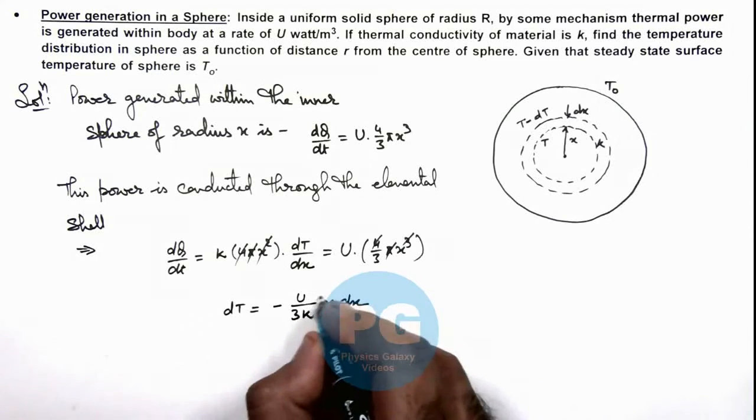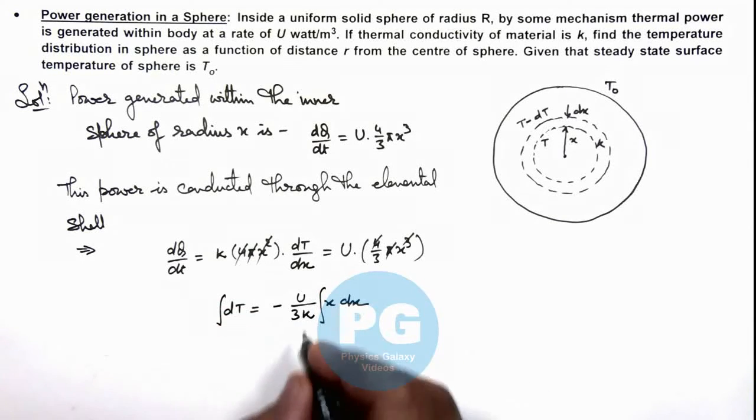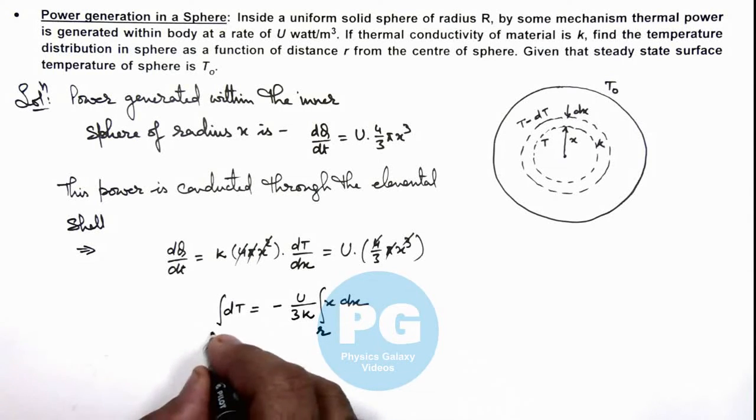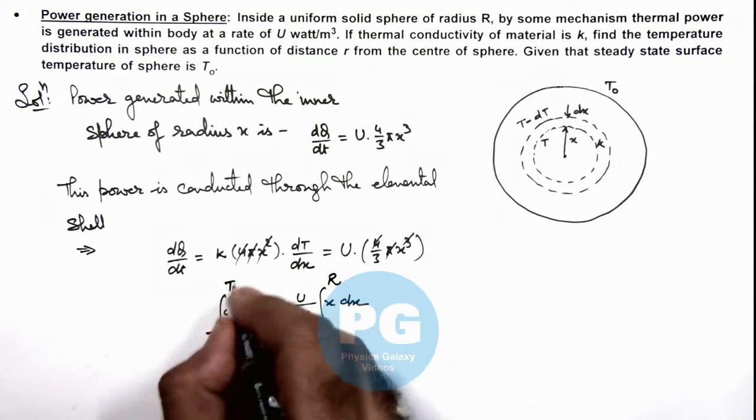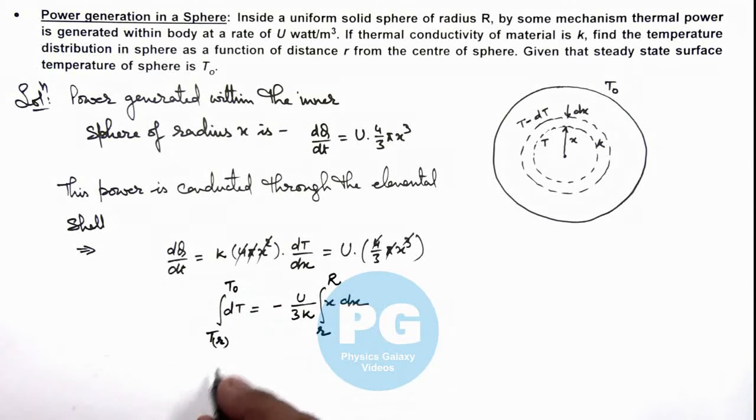So we can integrate this relation. At x equal to r, if we can consider temperature is T, which we are required to find, and at x equal to capital R if temperature is T₀, then on integrating this gives us: